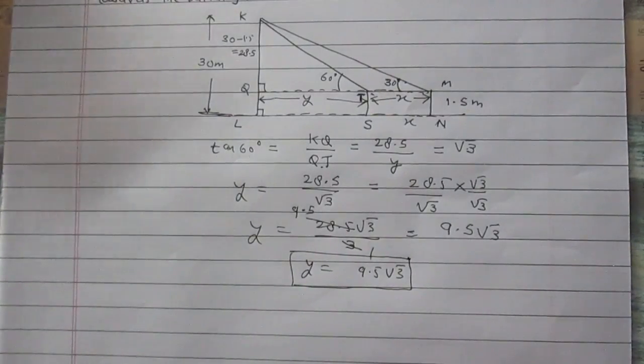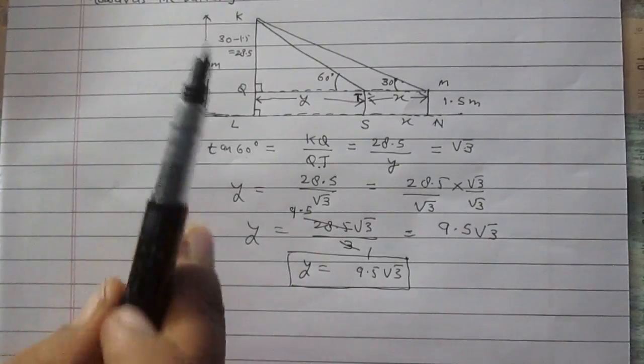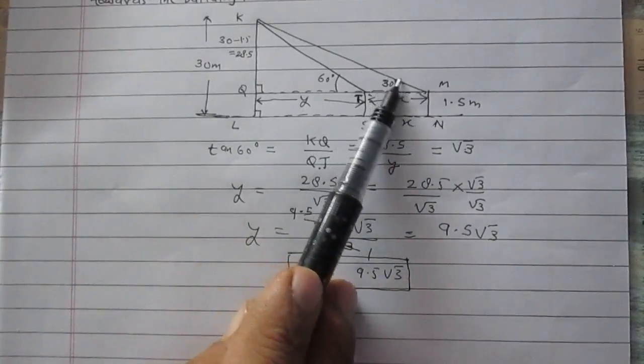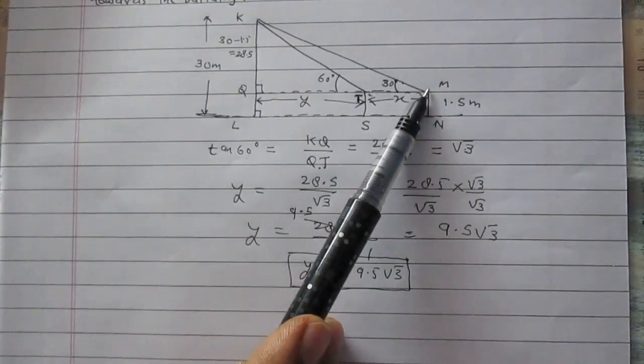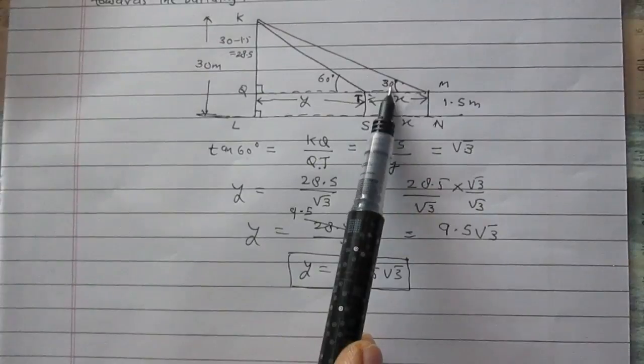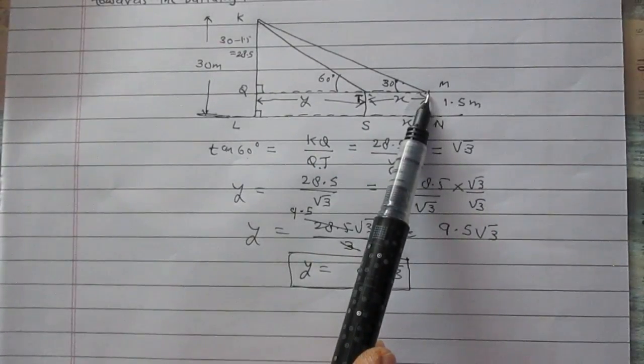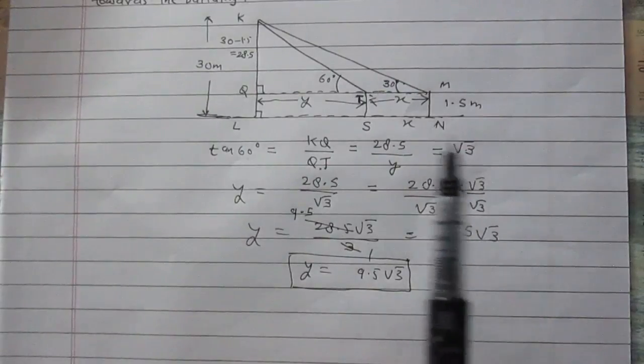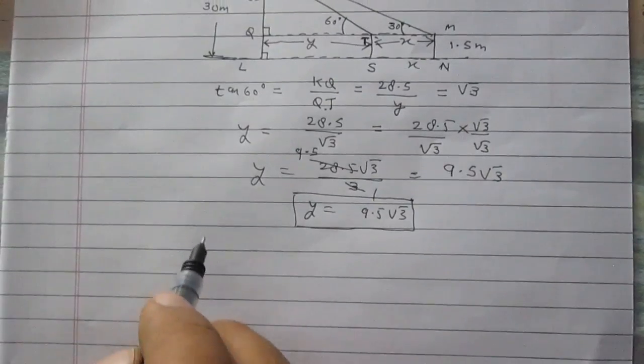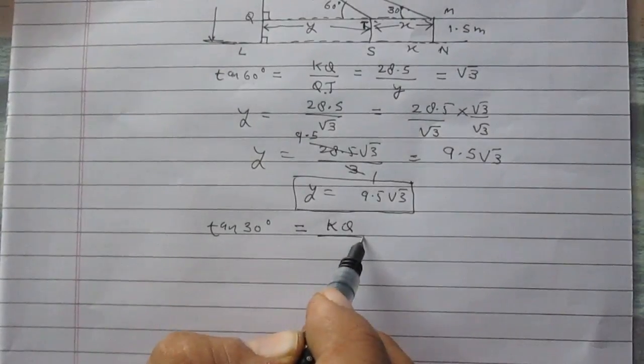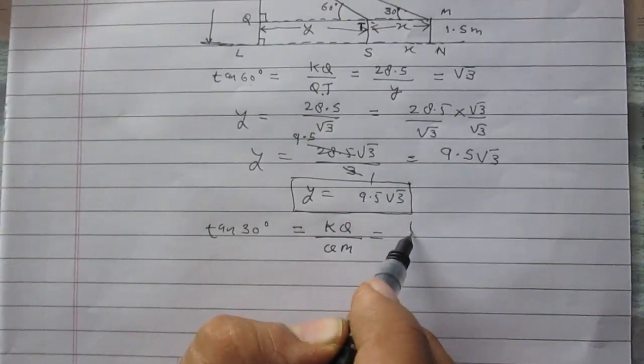Now in triangle KQM, KQM is a right angle triangle. The longest side is KM, this is the longest side KM in KQM, the right angle triangle. So KM is the longest side so KM is hypotenuse. Side QM is making the angle under consideration 30 degrees. So KQ is just opposite to 30 degrees so it can be considered as perpendicular. So in triangle KQM,